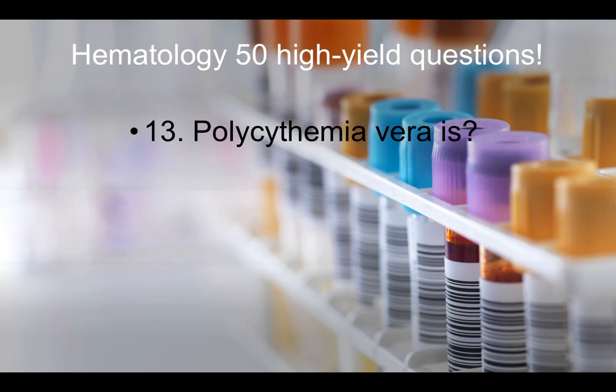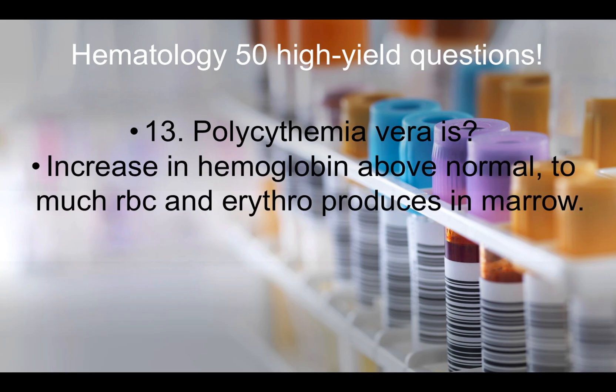Question number thirteen: What is polycythemia vera? Polycythemia vera is increased hemoglobin above normal levels — too many RBCs and erythrocytes produced in the marrow.